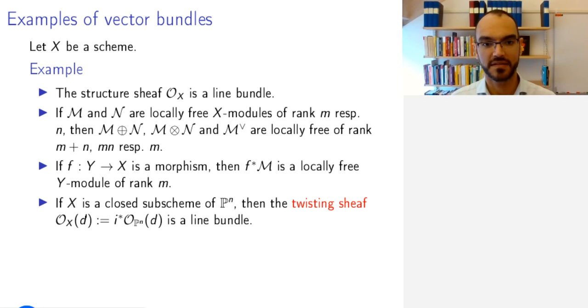Also, if I take a closed subscheme of the projective space, such as the scheme associated to a projective variety, then the twisting sheaf O_X(d) is defined by pulling back the twisting sheaf for the corresponding integer on P^N. And this is a line bundle.